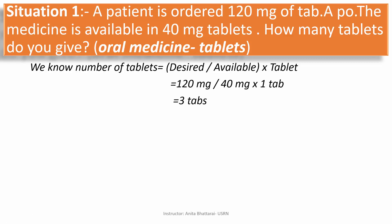To calculate the number of tablets, we use the formula: desired dose divided by available dose, multiplied by tablets. The desired dose here is 120 mg, divided by the available dose of 40 mg, multiplied by 1 tablet. By calculating, we get 3 tablets. So three tablets is the answer for this question.